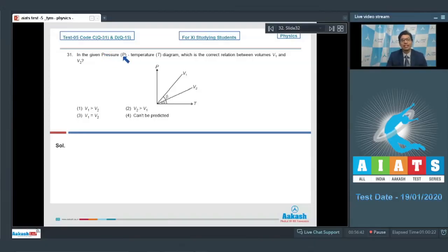Question 31 says, in the given pressure temperature diagram, which is the correct relation between volume V1 and V2? Dear students, from the ideal gas equation, we can write down that PV is equal to nRT or P is equal to nR times 1 by V into T.